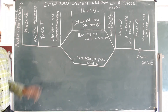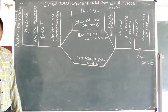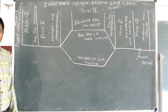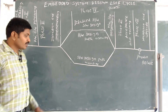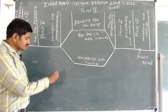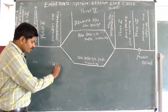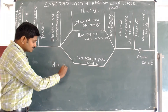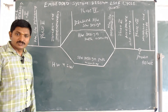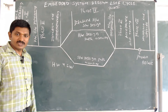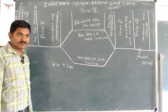Before going to see about Embedded System Design Life Cycle, we will discuss about what is meant by Embedded System. An Embedded System is a combination of hardware and software, which is used to perform a specific task at a specific time.